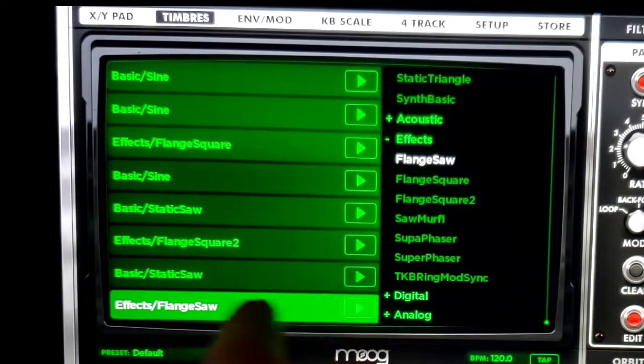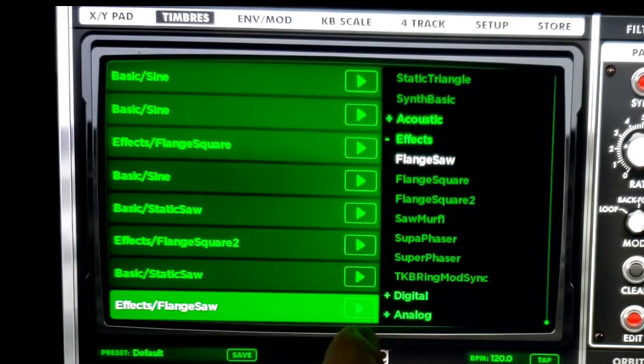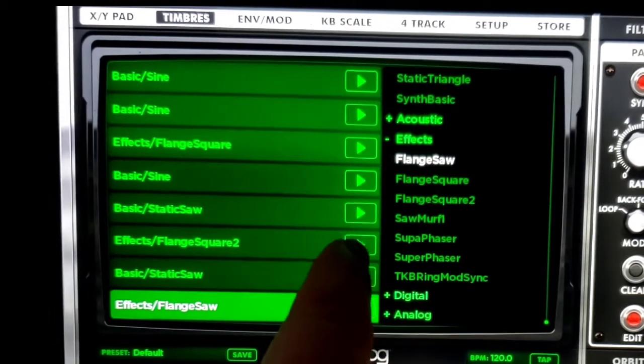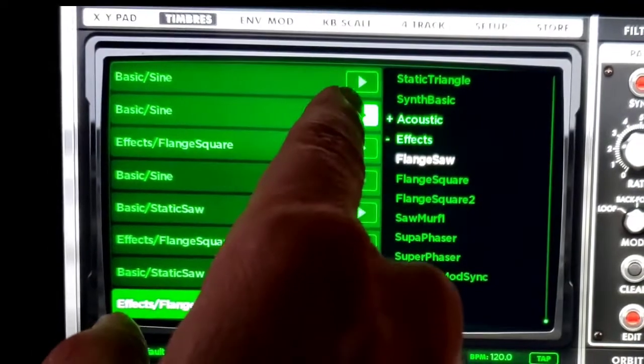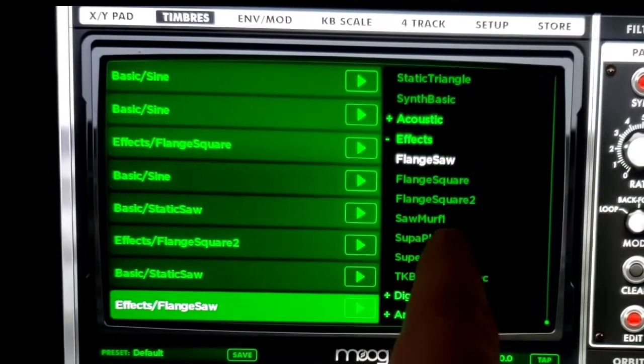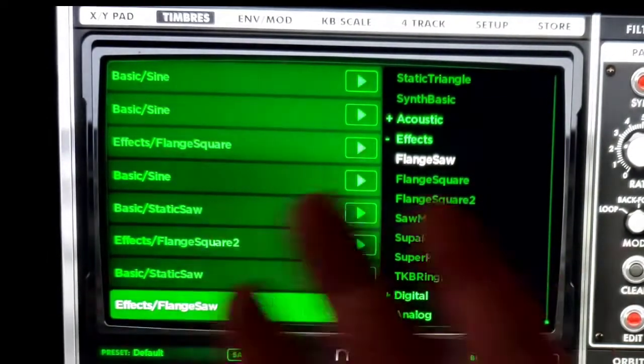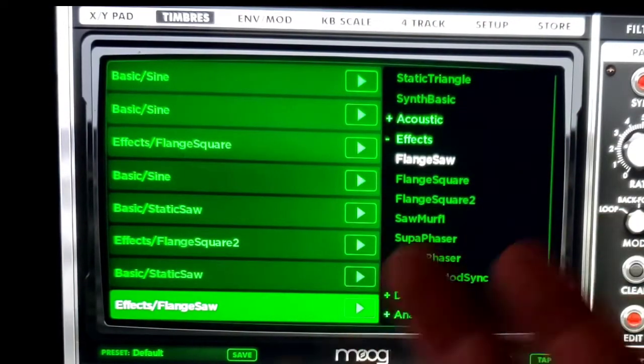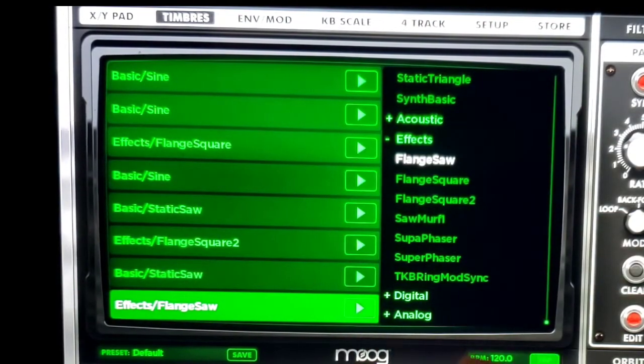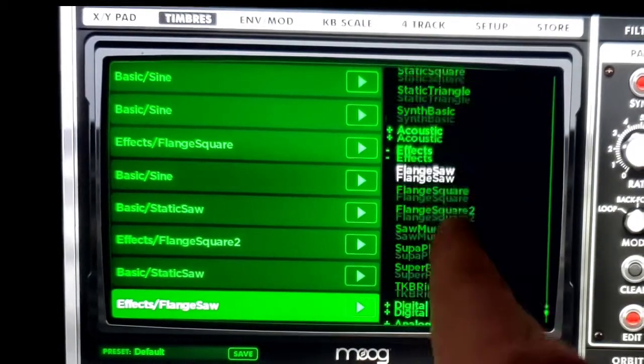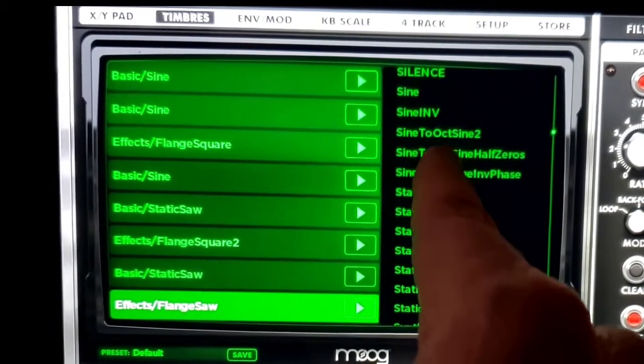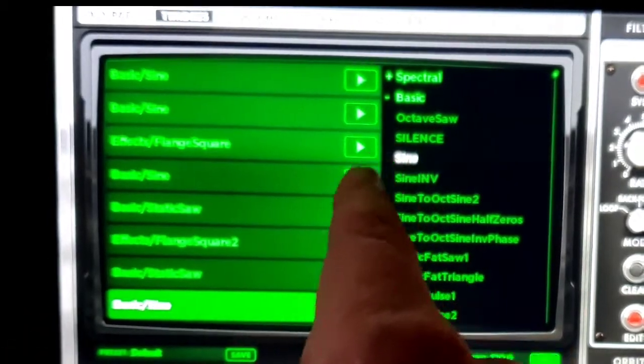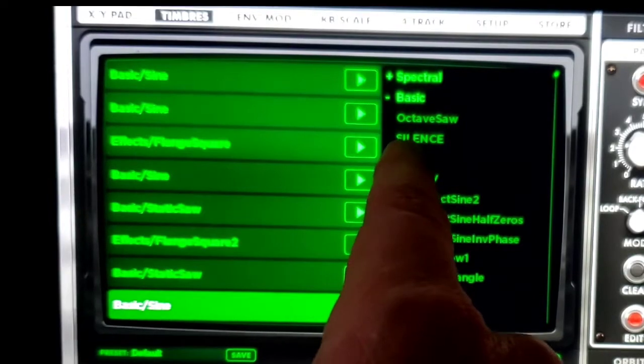Timbres are the basic sounds that you can use to combine to make sounds on the Animoog. What you're going to do is just play with them. You get a whole bunch that are included with the basic package. You can also buy extra ones. We're going to look at some basic ones like the basic sine wave right here because the sine wave has a nice smooth sound.